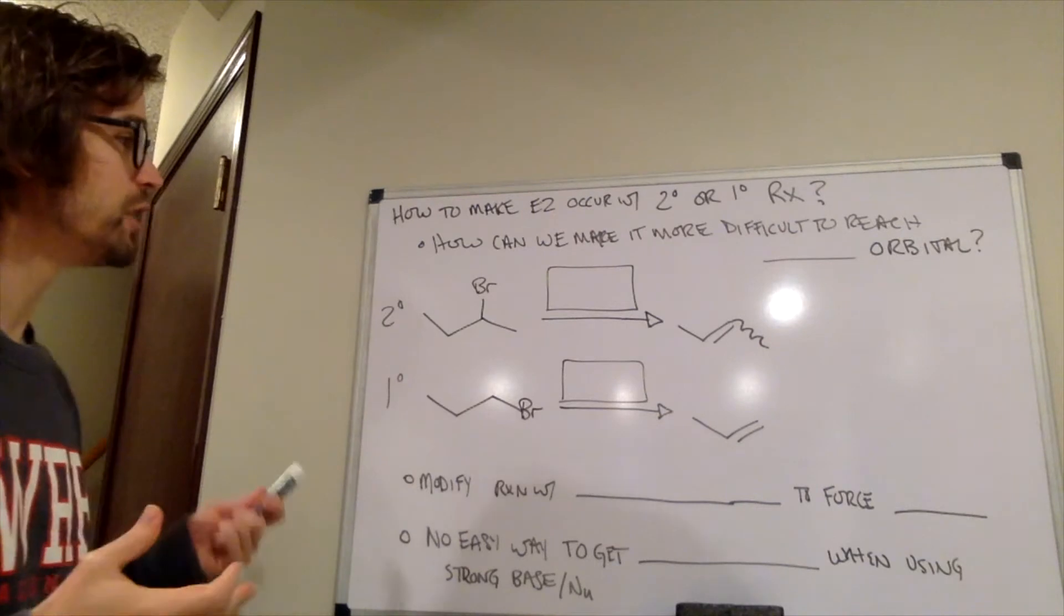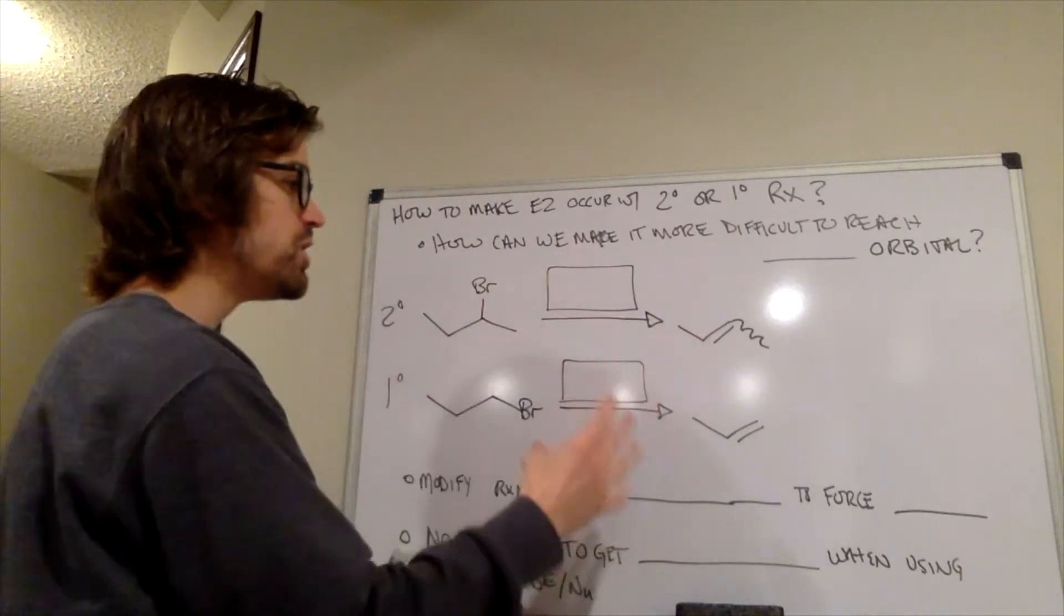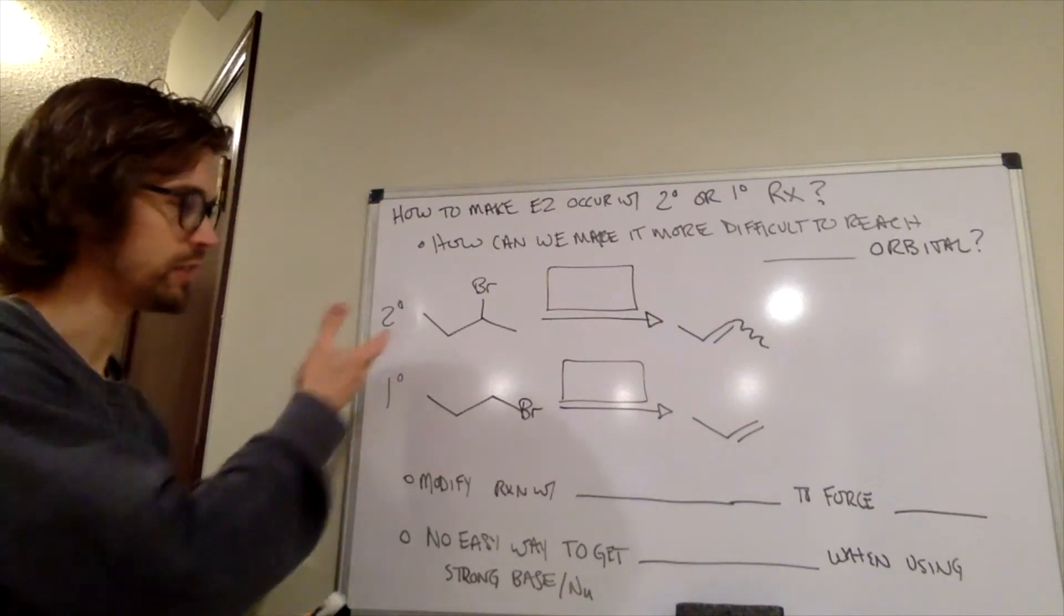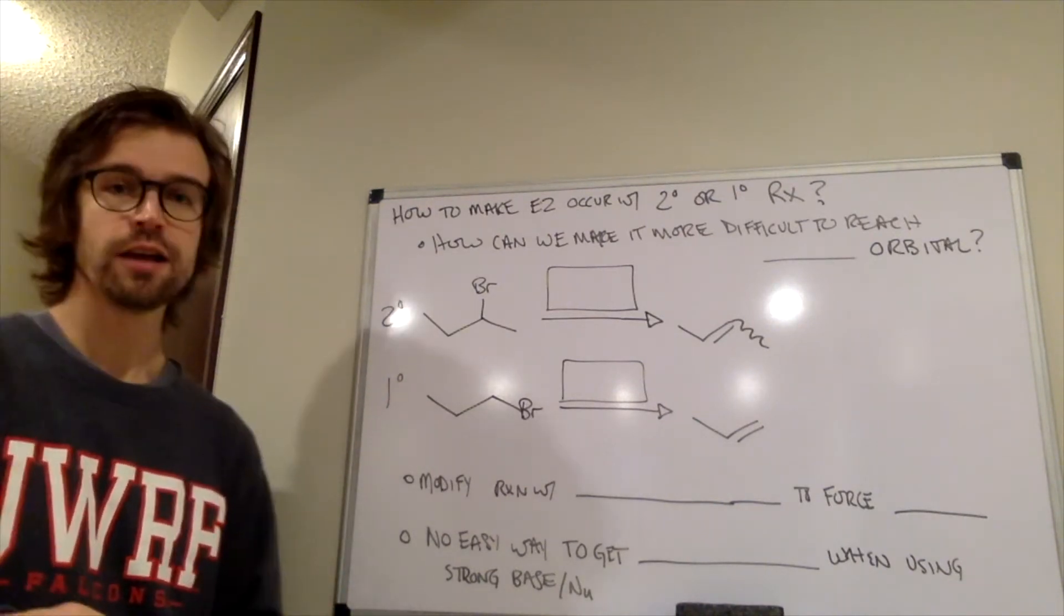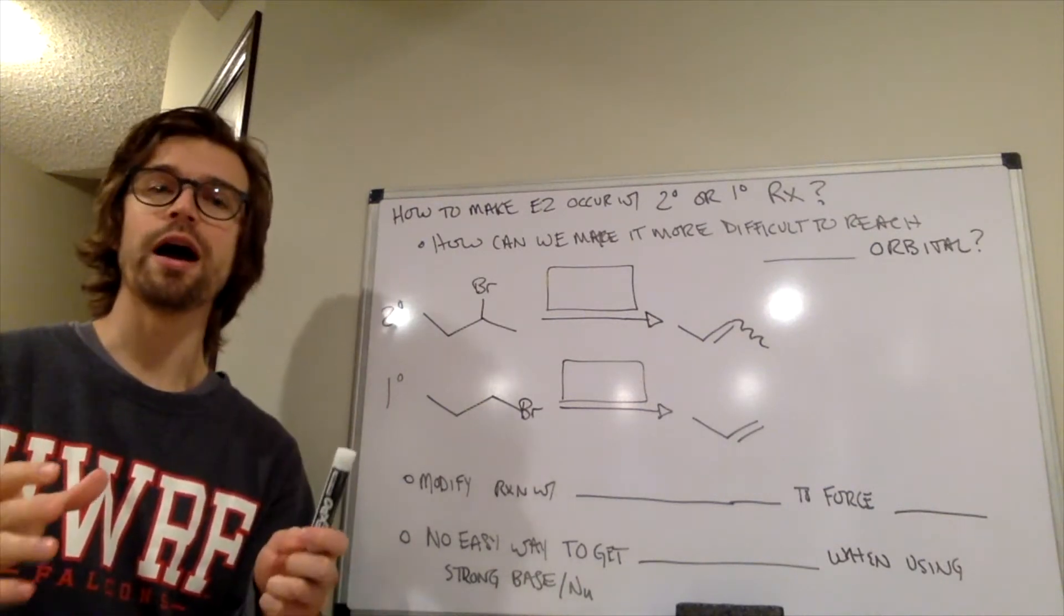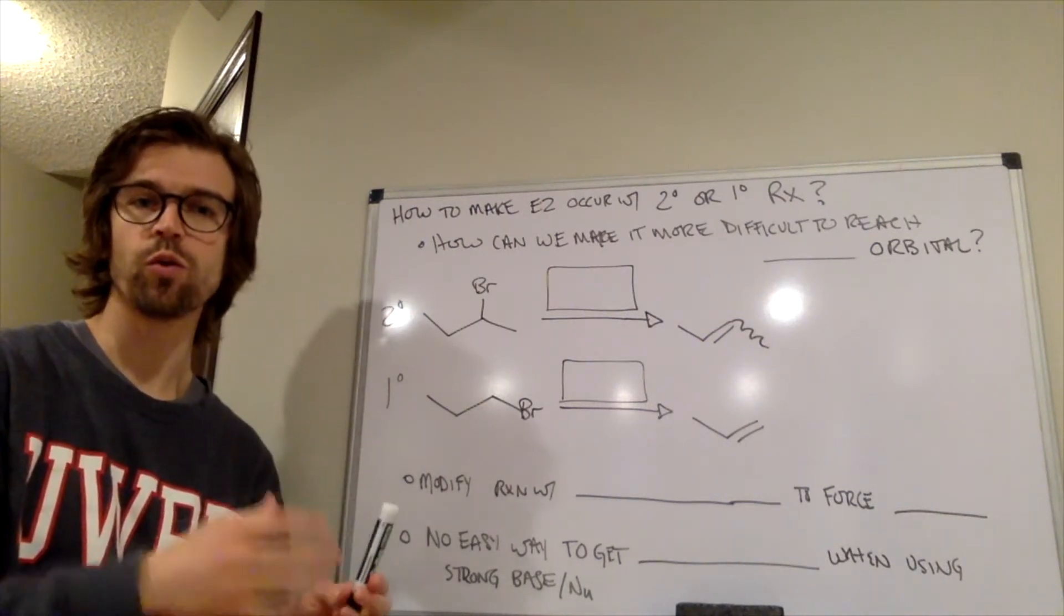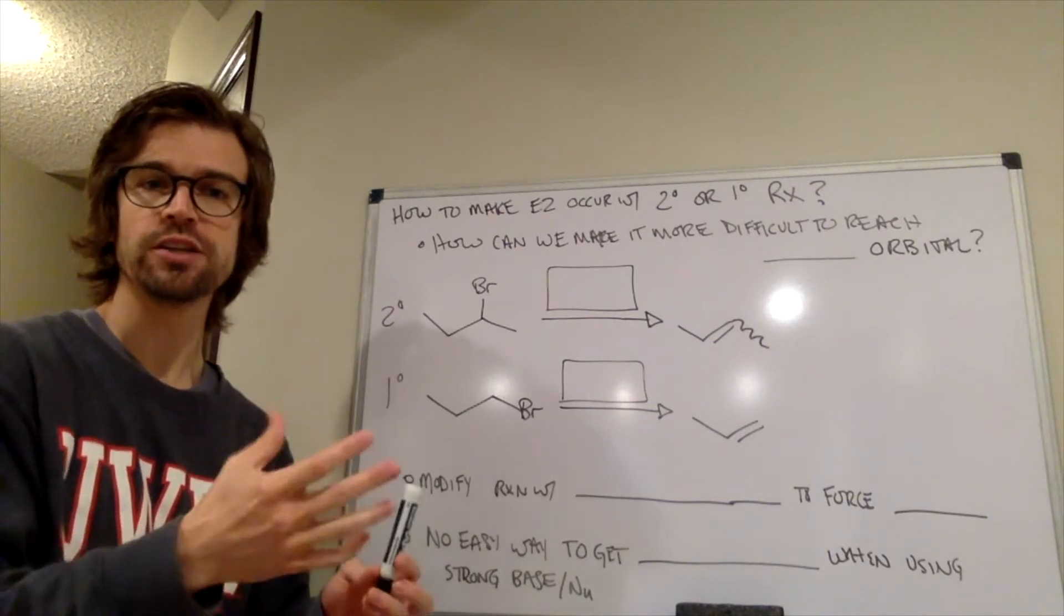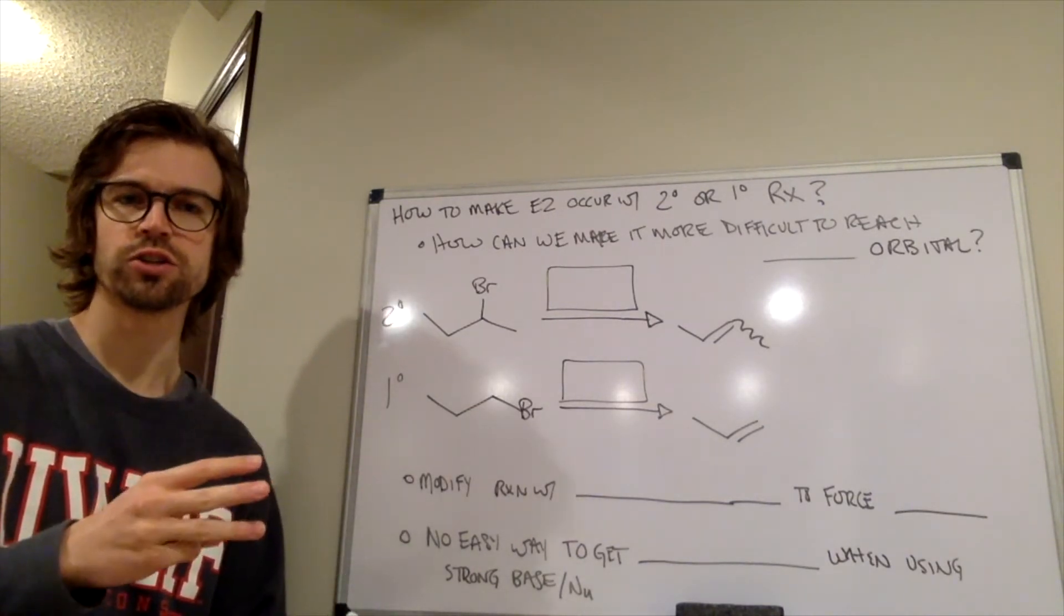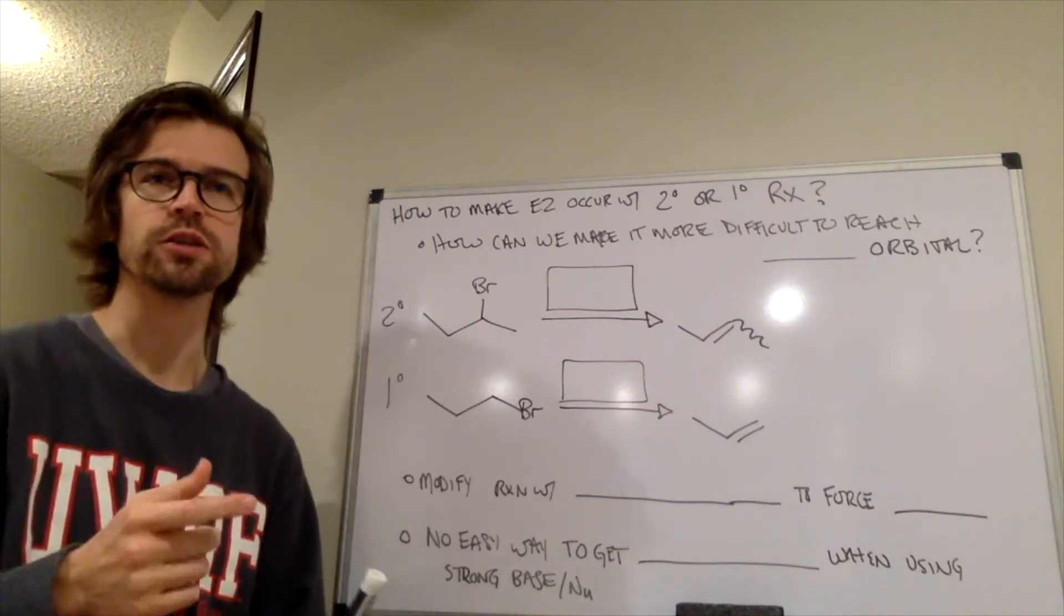But the question is, how can we force E2 with these types of molecules, so secondary or primary alkyl halides? And essentially, let's think about how, about why tertiary alkyl halides only do E2, and they don't do SN2. So why do tertiary alkyl halides only do E2?